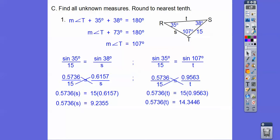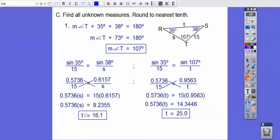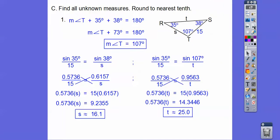So when we do that, we get that and then divide by 0.5736 on both sides. And we get about, T is 16.1, and this is S. This should be S. I'm sorry, you guys. So S is about 16.1, T is about 25.0, and it said find all the angles, so 107 right there.